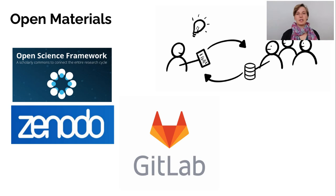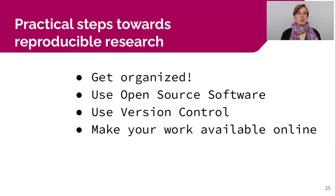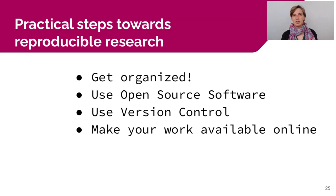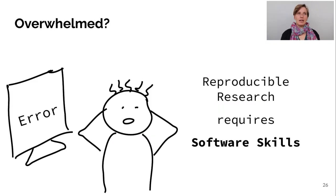So these are the four steps I recommend as first steps to make your work more reproducible: get organized, use open source software, use version control, and make your work available online. Now if that seems overwhelming, you're probably not alone.